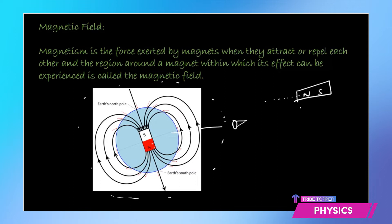I have to bring this magnet closer and closer, and supposedly I bring it here into this region, and there is immediately an attraction and they cling to each other. So that means when the other magnet or magnetic object enters the field of this magnet, then the attraction or repulsion will happen. So by field we mean a certain region around this magnet where its effect — its influence — can be experienced by the other magnets. That is limited to a certain region, and that region we call the magnetic field.